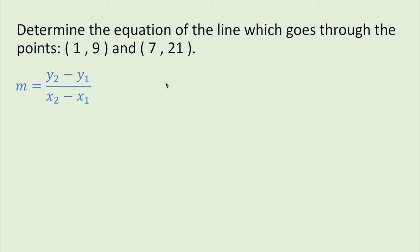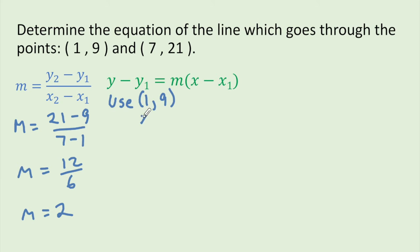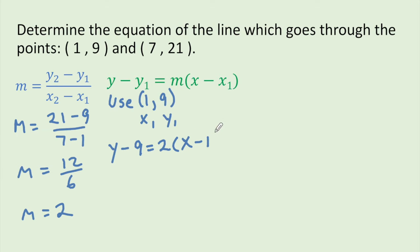The next thing we are going to do is use the point-slope form of the equation of a line. Since there are two points, we can use either one. I'm going to take the first point, (1, 9), and designate this x1 and y1, the same way it was before. Substituting into the equation gives us: y minus 9 equals 2 times x minus 1. That is the point-slope form of the equation of a line.